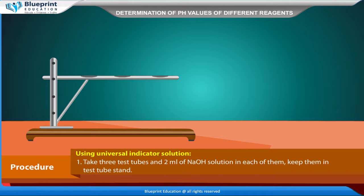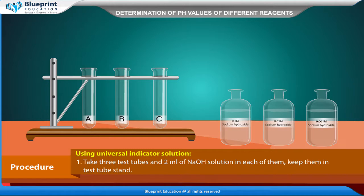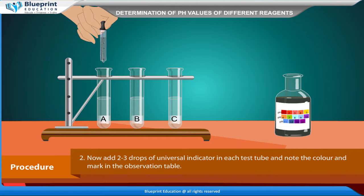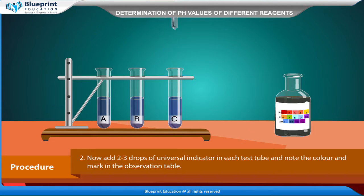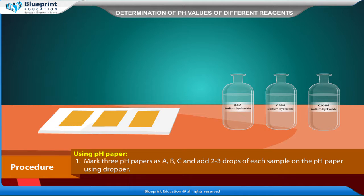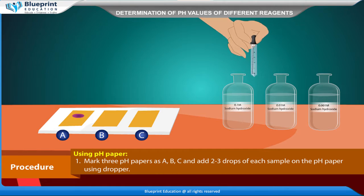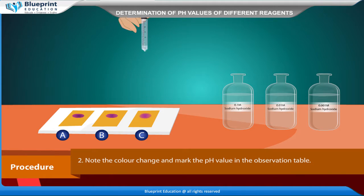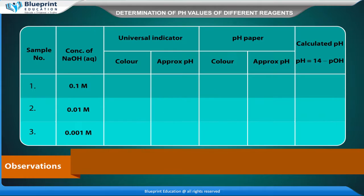Procedure using universal indicator solution: Take 3 test tubes and add 2 ml of NaOH solution in each, then keep them in the test tube stand. Add 2-3 drops of universal indicator in each test tube and note the color in the observation table. Using pH paper: mark 3 pH papers as A, B, C and add 2-3 drops of each sample on the respective pH paper using a dropper. Note the color change and mark the pH value in the observation table.